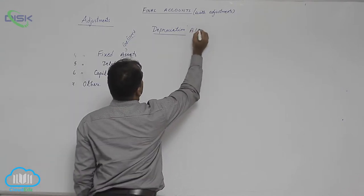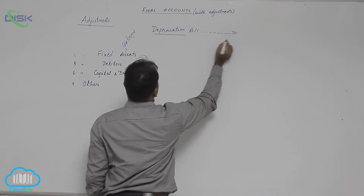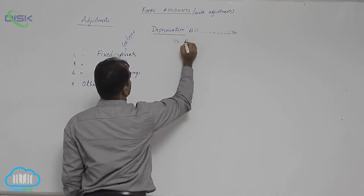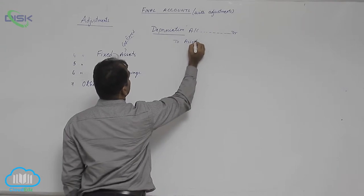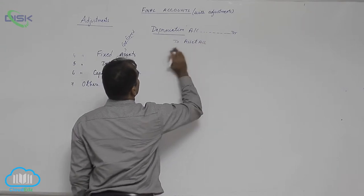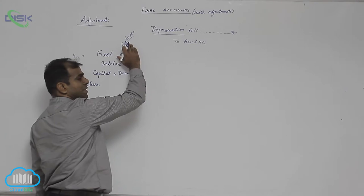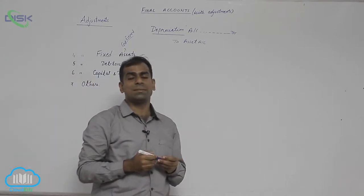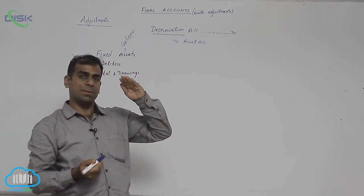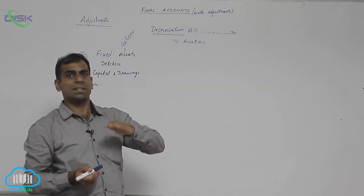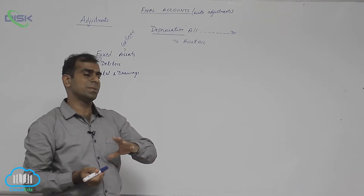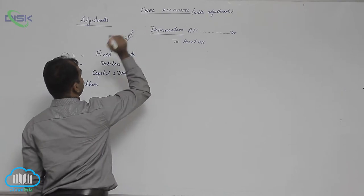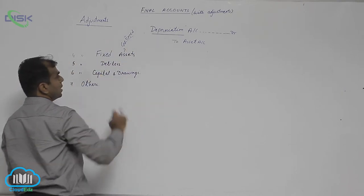The rule of nominal account is applied: we debit depreciation. So the journal entry is depreciation account debit to asset account. We credit the asset account because we have to remove the amount which has expired from the asset account. Assets show a debit balance, so we have to reduce the debit amount of that asset — the debit value of the asset has to be reduced, so we credit the asset. This is the adjustment entry for depreciation.